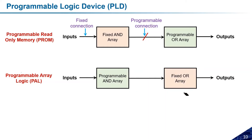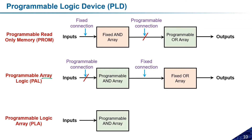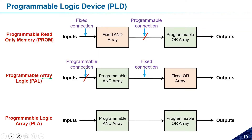In PAL, the input connections are programmable and output connections are fixed. The third variant is the Programmable Logic Array (PLA). Don't be confused between PAL and PLA: in PAL we have a programmable AND array but a fixed OR array, whereas in PLA both sections — AND and OR — are programmable.